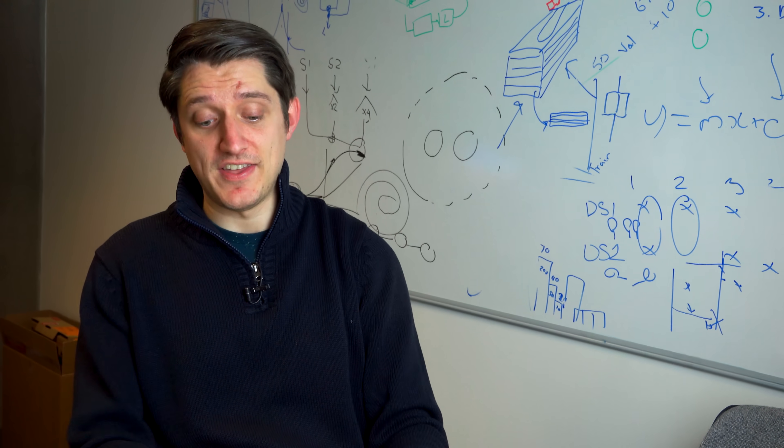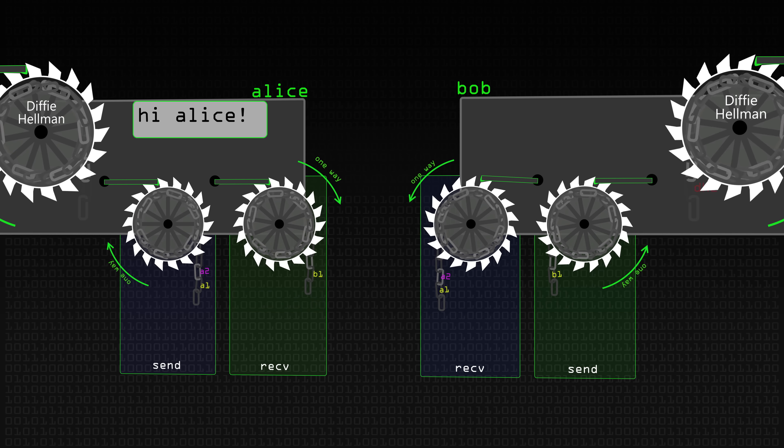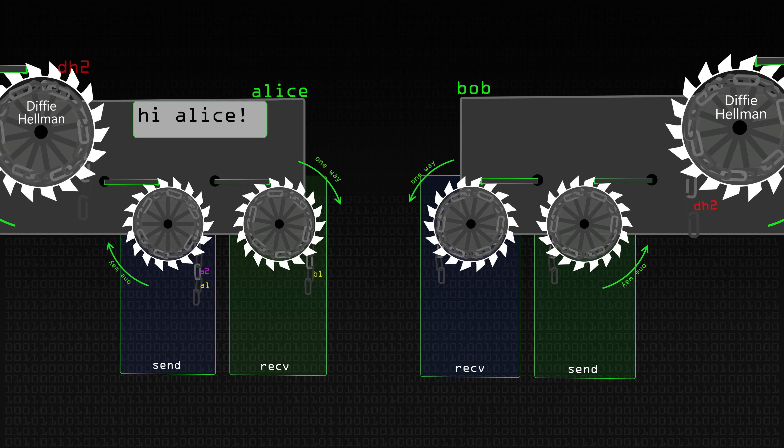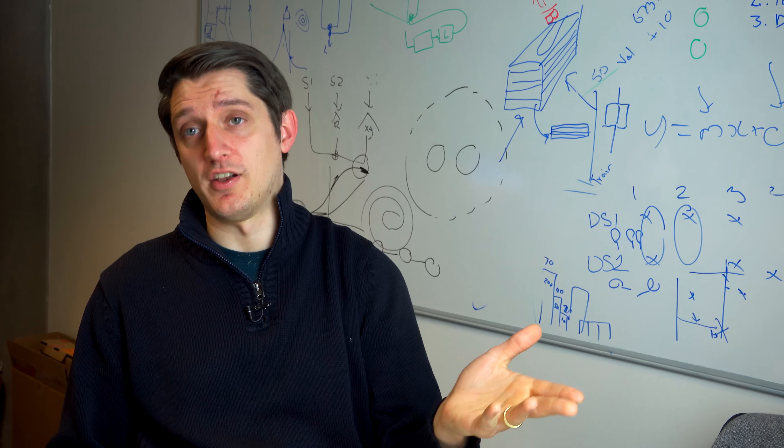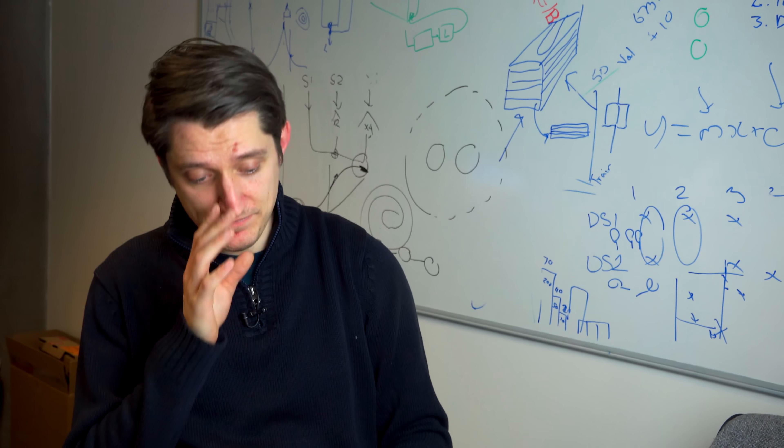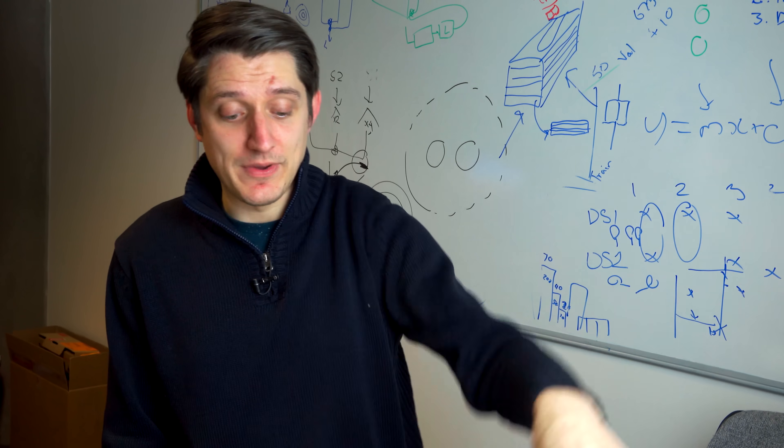He will have already updated the moment he sends the Diffie-Hellman so that he can then send B1 using the latest Diffie-Hellman pair. They can send these every message if they want or hardly ever. In practice, it's sent every message.